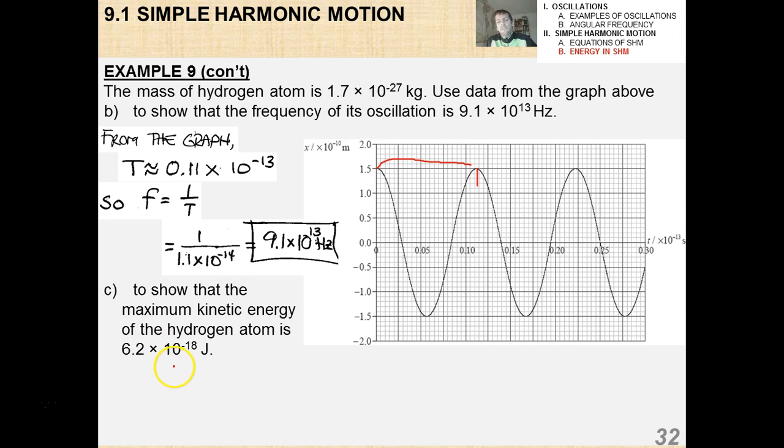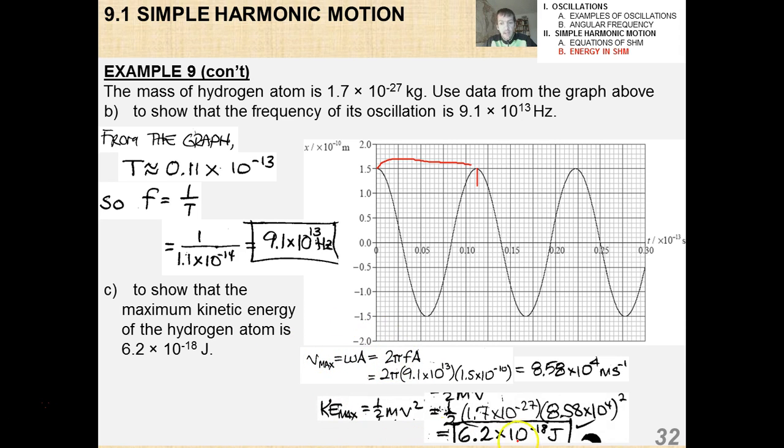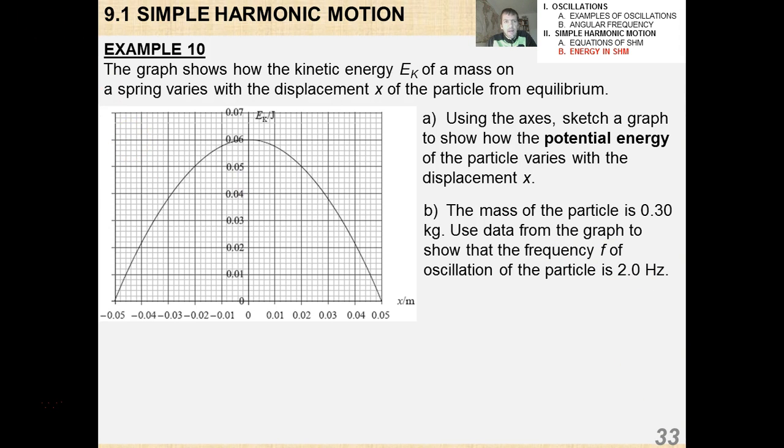Part C, show that the maximum kinetic energy is 6.2 times 10 to the minus 18. Now what I'm going to do here is I need to find the maximum speed. And then what I can do is I can just put that, and this is one way to do it. This is not the only way. I put the maximum speed into my 1.5 mv squared, and I got that at 6.2 times 10 to the minus 18 joules.